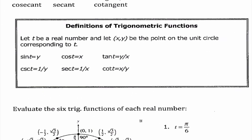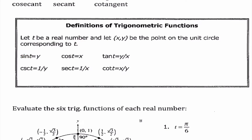So it says let T be a real number. T represents our angle here. And let XY be the point on the unit circle corresponding to T. So basically, instead of memorizing all these values, what we're going to memorize is that sine is the Y value of the ordered pair, cosine is the X value of the ordered pair, and tangent is Y divided by X. Cotangent, secant, and cosecant are all reciprocal values. On cosecant, Y cannot be equal to 0. On secant, X cannot be equal to 0. On cotangent, Y cannot be equal to 0. For tangent, X cannot be equal to 0. So that just gives us a little idea of our restraints here.